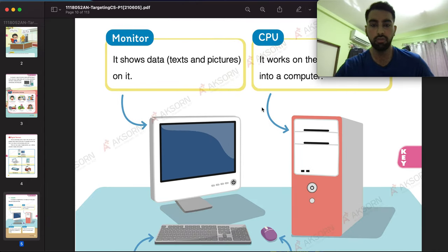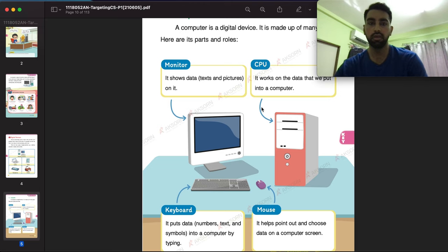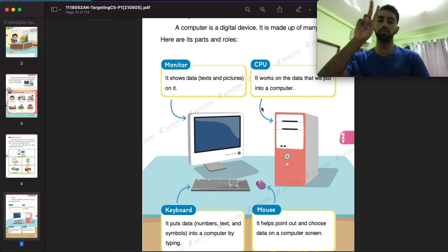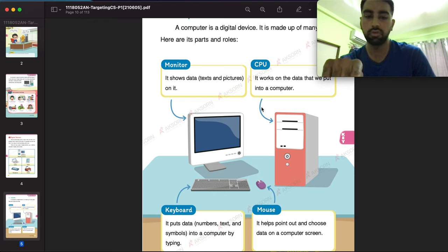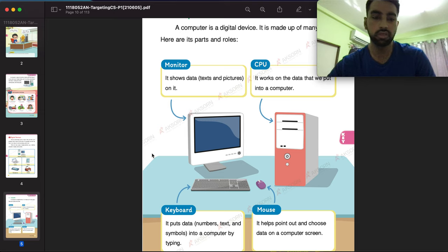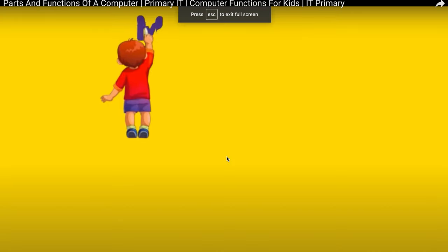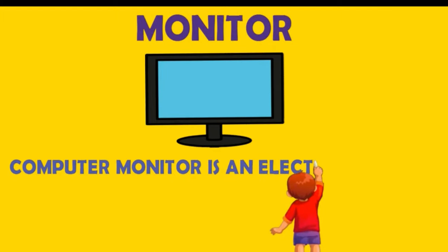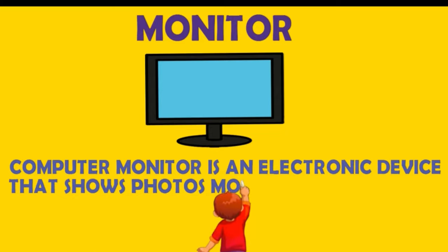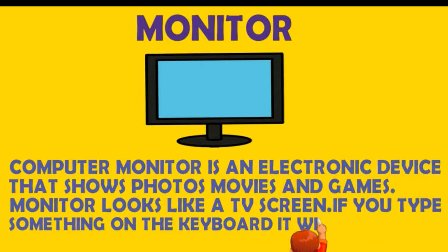How many parts of a computer do we have? You can see: monitor, CPU, keyboard, and mouse. Before we start I'd like you to watch a video so you can understand better. A computer monitor is an electronic device that shows photos, movies, and games. It looks like a TV screen — if you type something on the keyboard it will appear on the screen.